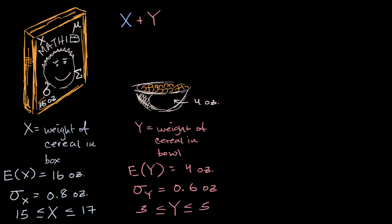So, in previous videos, we already know that the expected value of this is just going to be the sum of the expected values of each of the random variables.